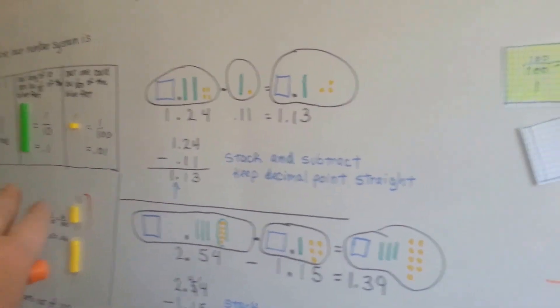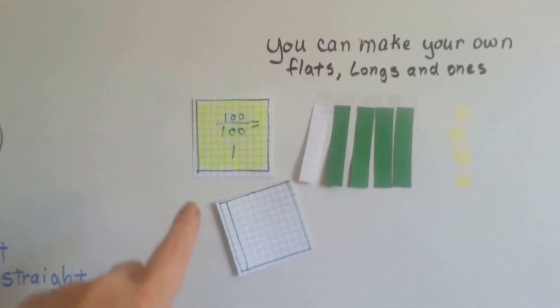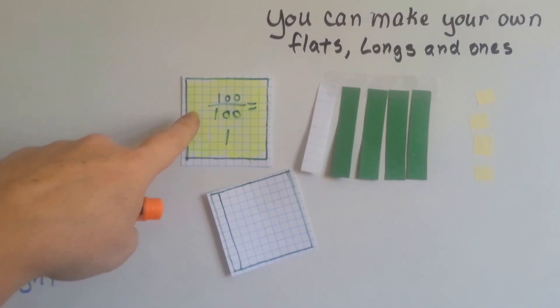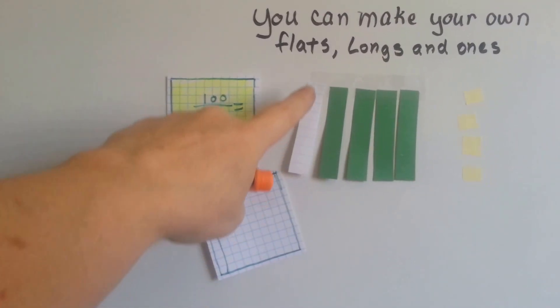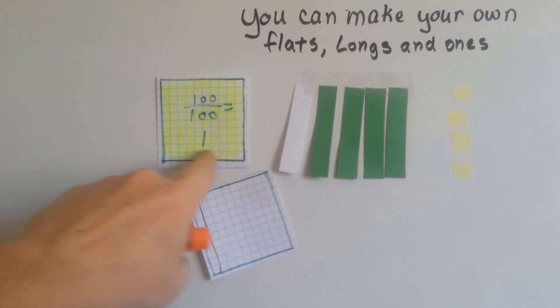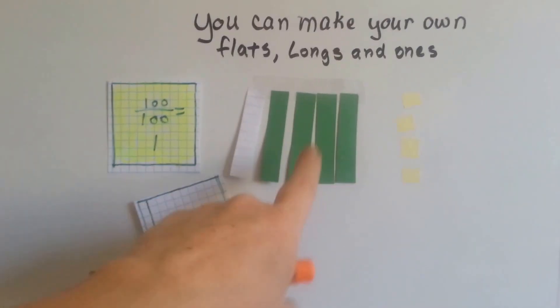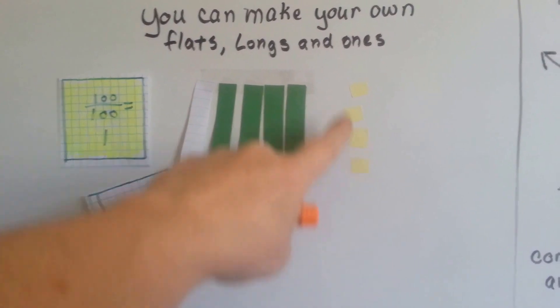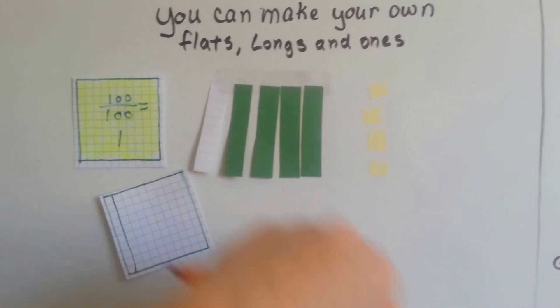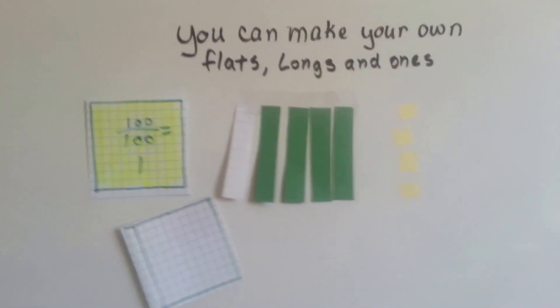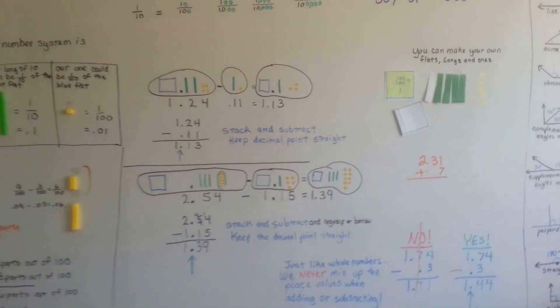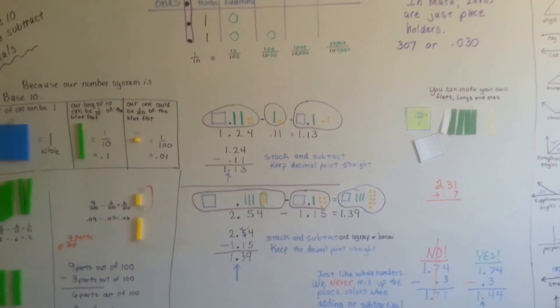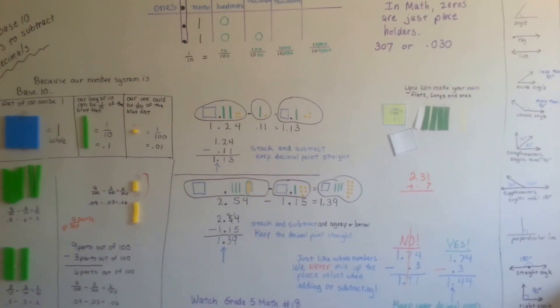And another thing you can do is if you don't have these models to work with, you can make your own. You can get graph paper that's got the boxes in it and you can make a hundred or you can use school paper to make a hundred block or a ten long. You can use construction paper or you can use school paper and color them yellow to make the little units and you can make your own and they're kind of fun to make. It'll be a little art project for you.